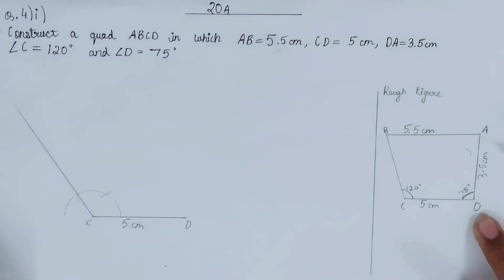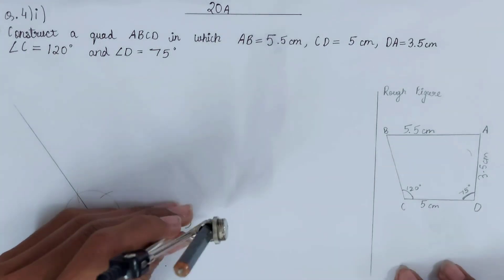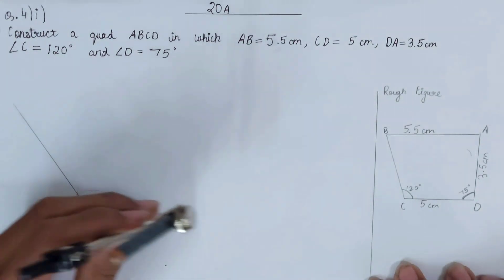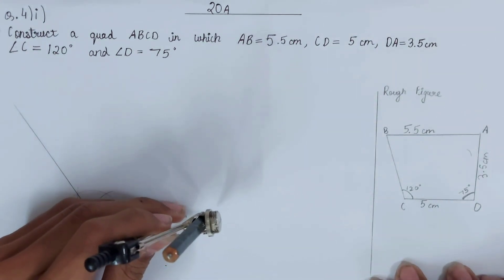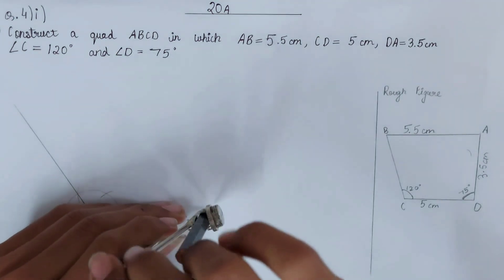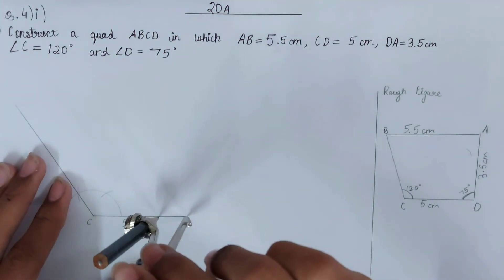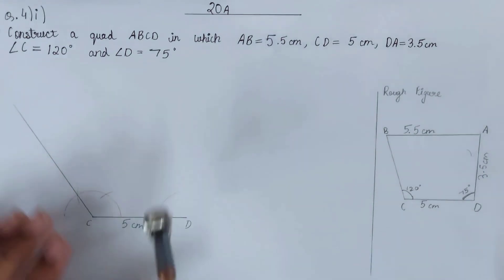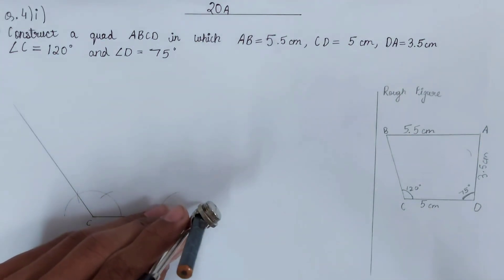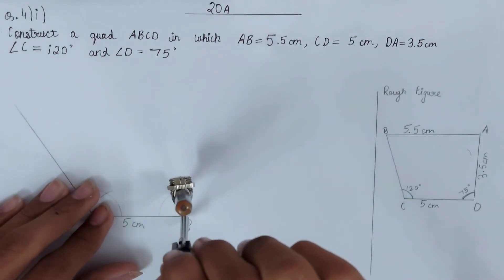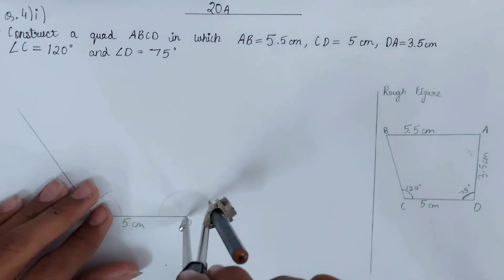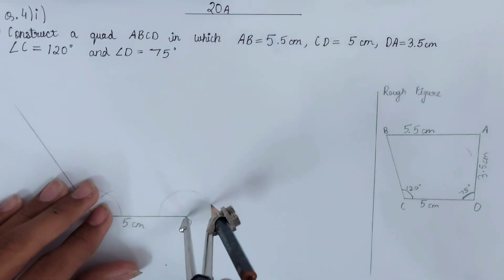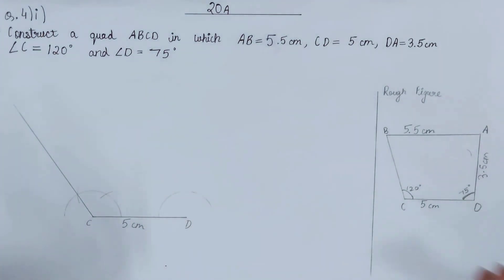At point D in the rough figure we have a 75° angle. Again, grab your compass, place it at point D just as we did at C, and draw an arc. The arc is done — now the real work begins, because constructing 75° is a bit tricky.